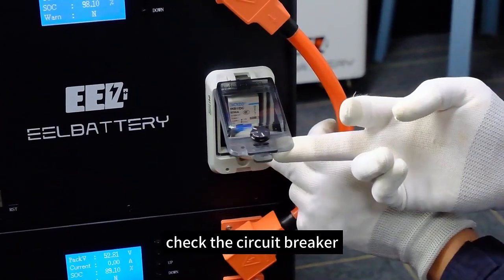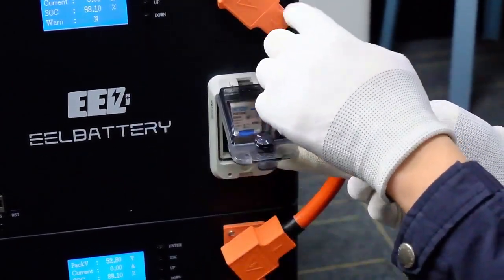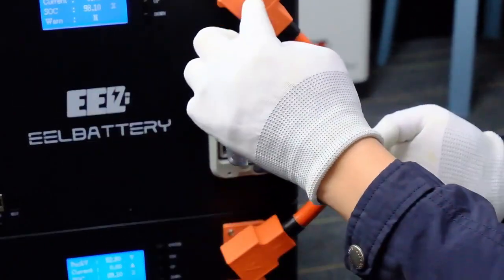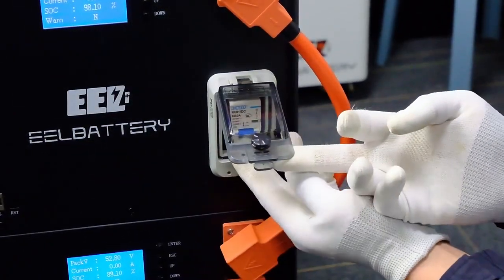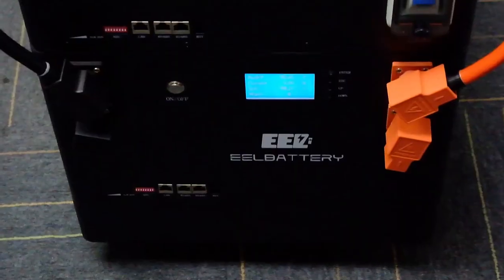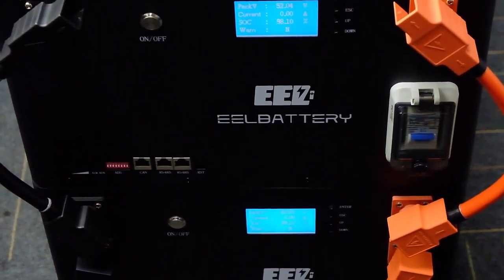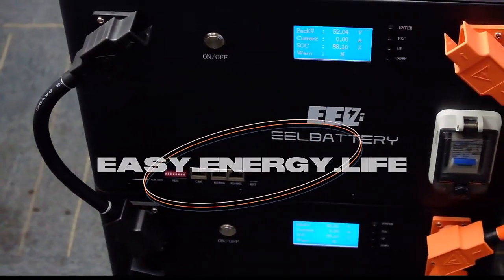Check the circuit breaker. ELV 4 battery box is assembled. Thanks for watching.